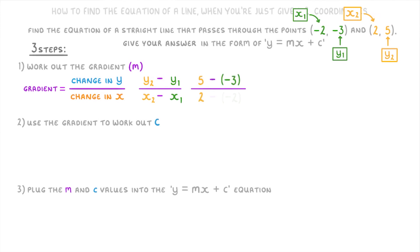Then we can simplify this to 5 + 3 on top over 2 + 2 on the bottom, because remember whenever we take away a negative number that's the same thing as adding that number. So we now have 8 divided by 4 which is just 2, so the gradient of our line or m is 2.